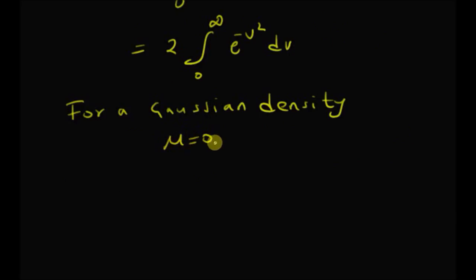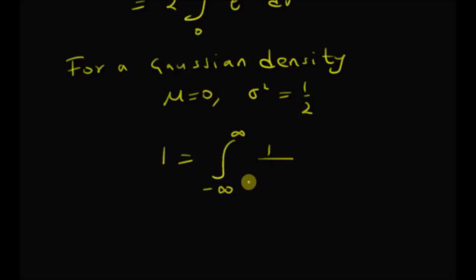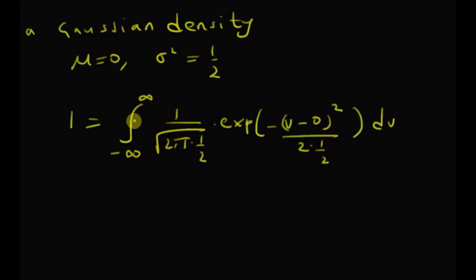For a Gaussian density with mean μ = 0 and variance = 1/2, the area under the Gaussian density, which is equal to 1, is equal to the integral from -∞ to +∞ of 1 over √(2π · (1/2)) times the exponential of -(v - 0)² divided by 2 · (1/2) dv. That is, the area of this PDF is equal to 1.